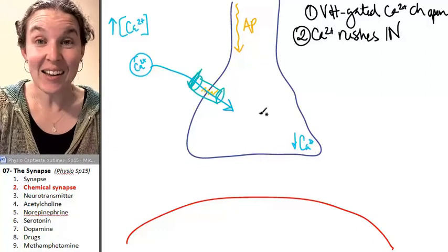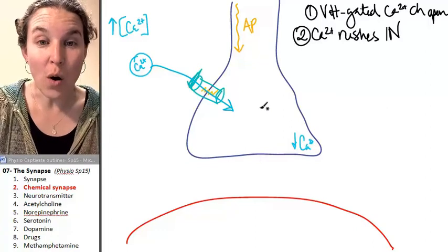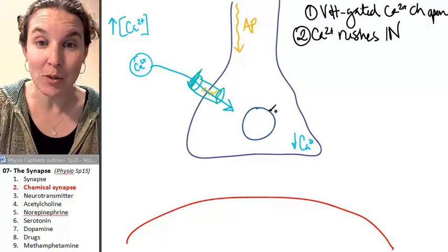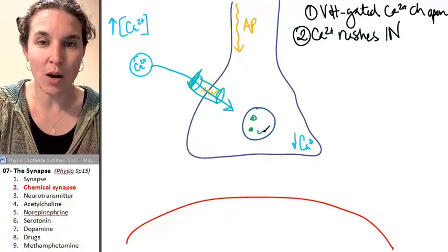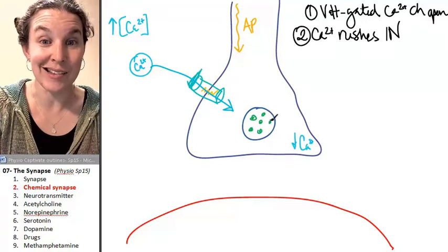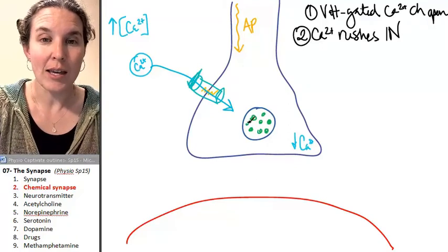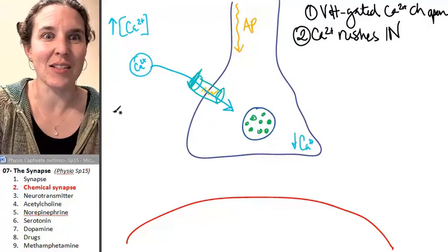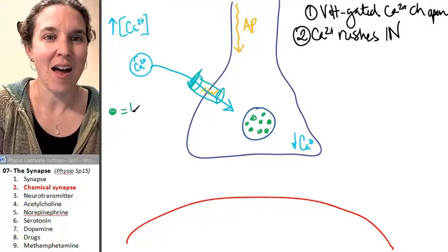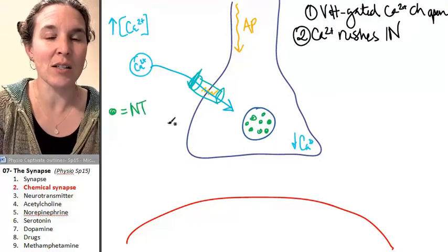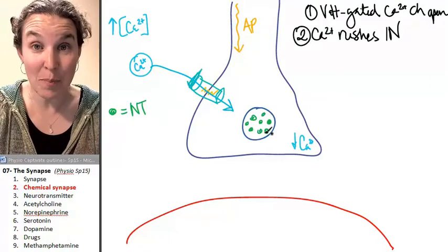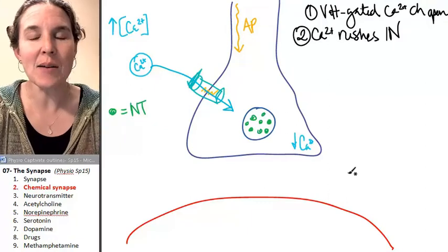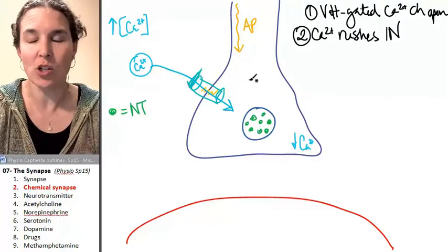Inside the axon terminal, you also have these little bubbles of juice. And I'm going to draw the juice like this. Guess what the little green things are. That's neurotransmitter. That's a chemical. And the chemical is inside this little bubble in the axon terminal. And in comes calcium because the action potential arrived.